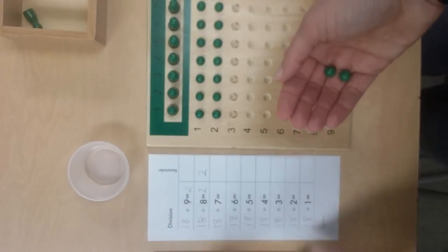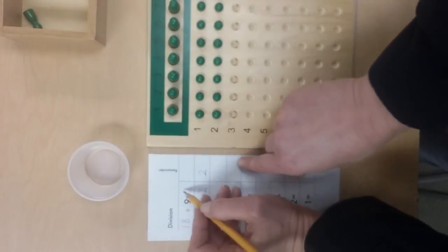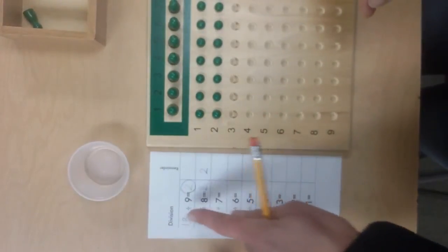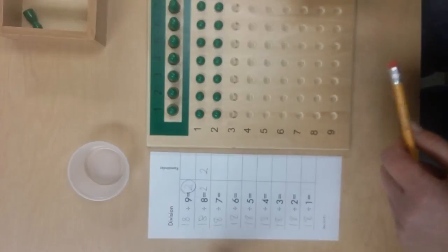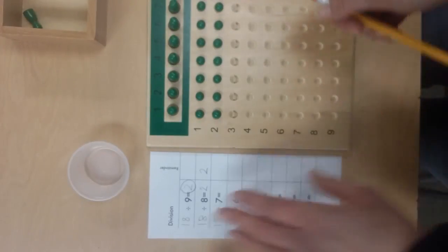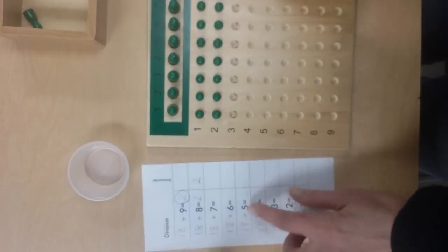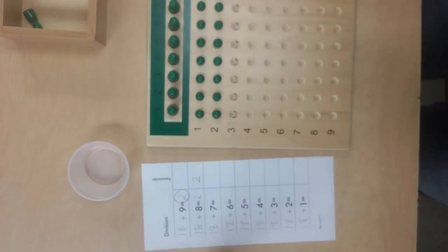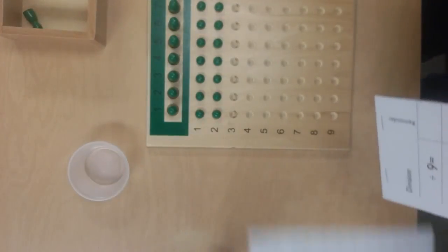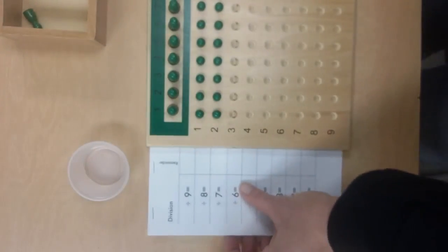You can have your students circle the answers that have no remainders when they're all done, because those are the ones that are their division facts—those are the ones they have to memorize. Once they've completed this page, on another day or if they want to keep going, they can get a new page and pick a different dividend.